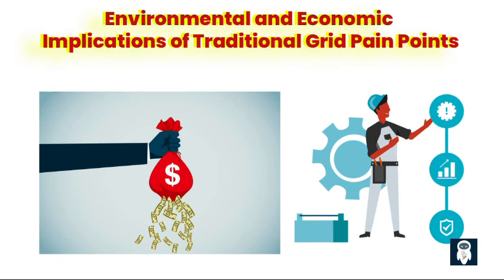There are also environmental and economic implications of traditional grid pain points. One: Energy losses and inefficiencies. Traditional distribution grids often suffer from energy losses and inefficiencies, leading to wasted resources and higher operating costs. These inefficiencies not only impact the environment negatively but also take a toll on the economic viability of the energy system.